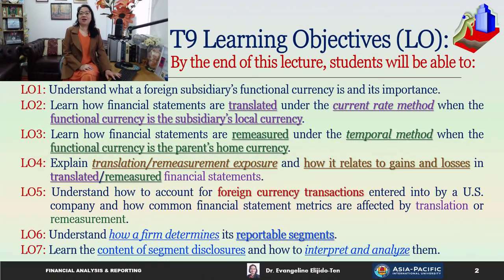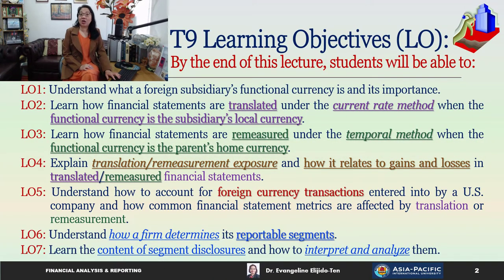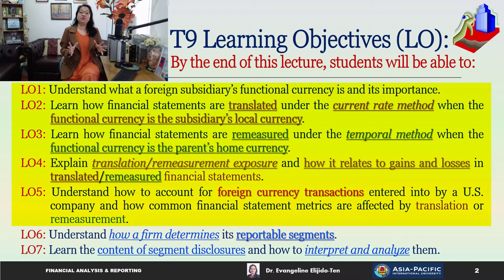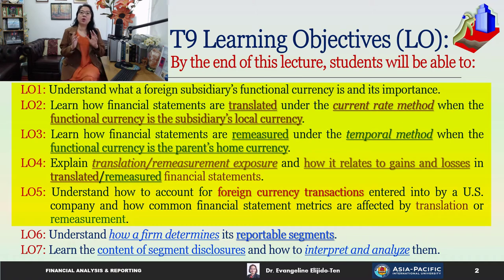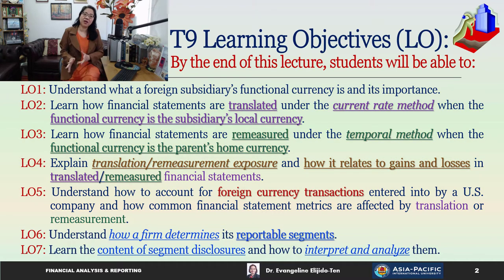In topic 9, we are going to cover 7 learning objectives. We will focus on the first 5 learning objectives in Part A of this lecture, focusing on foreign operations including foreign currency translation and remeasurement. Then in Part B, we will cover the last 2 learning objectives on reporting for segments.